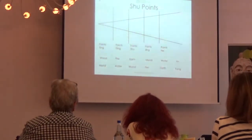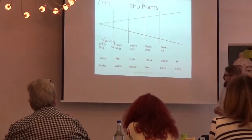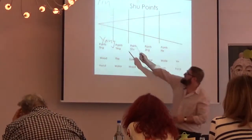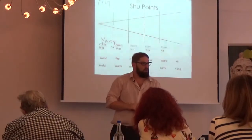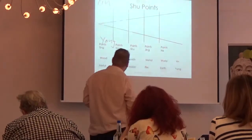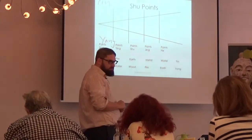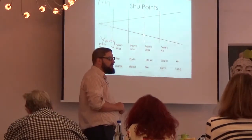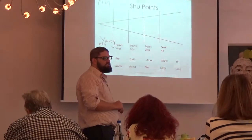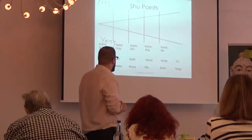So here we have Yin and Yang. What does that mean? It means that the first point on the Yin meridian is going to be Wood, the next point is Fire, and then Earth, then Metal, then Water. Anybody have a reason why it's written like that? It is written in the Nei Jing, but let's try to figure out why.